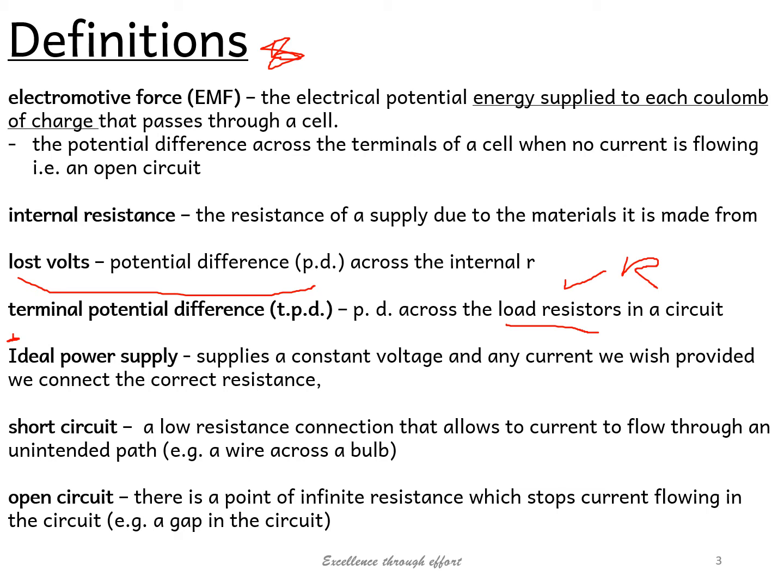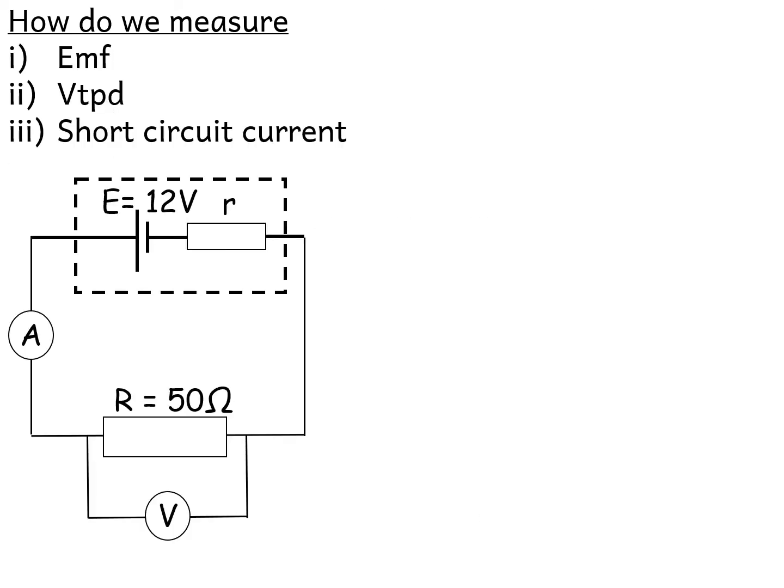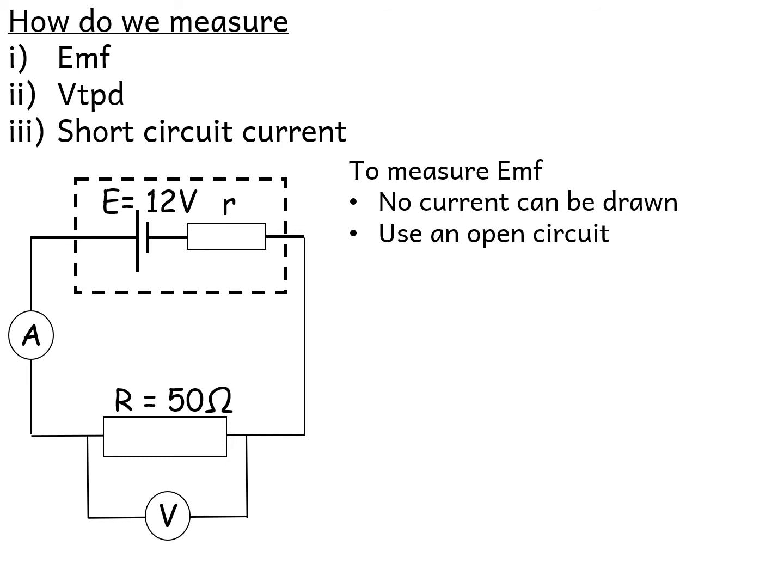Make sure you can memorize those definitions. Now, how do we measure EMF, VTPd, and short circuit current? Given a circuit with an internal resistance and a load resistor R, these three quantities are measured in different ways. To measure EMF, no current can be drawn — you use an open circuit.